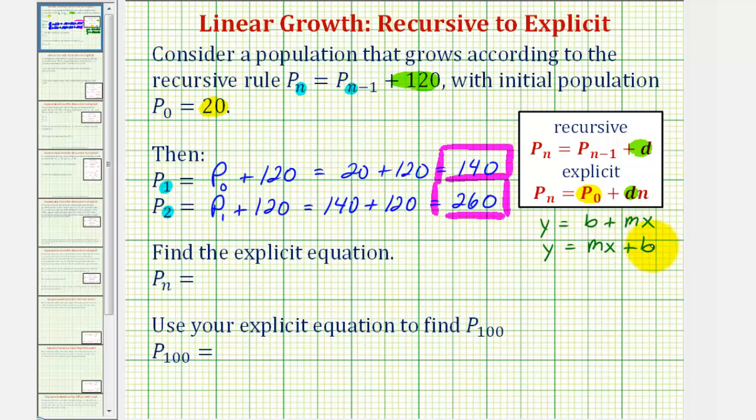And the y-intercept b is the same as the initial population P₀. So our explicit equation Pₙ is equal to P₀ which is 20 plus our common difference d times n. The common difference is 120, so we have 120 times n.